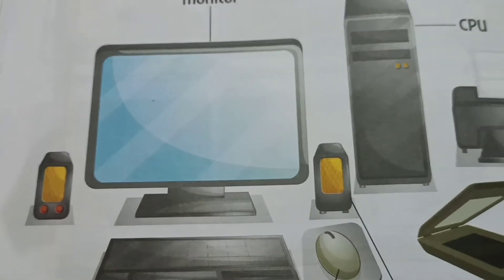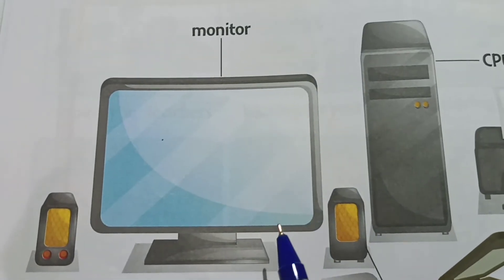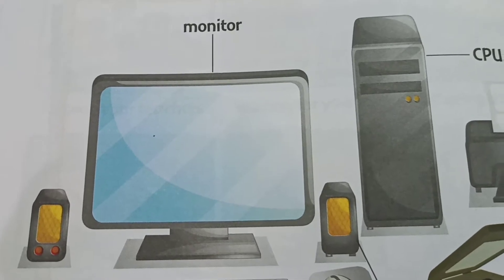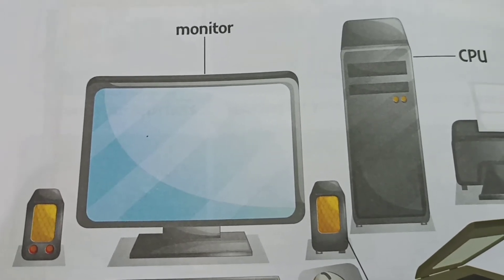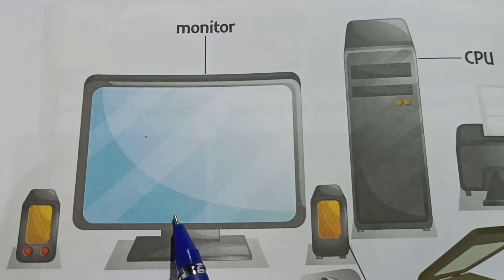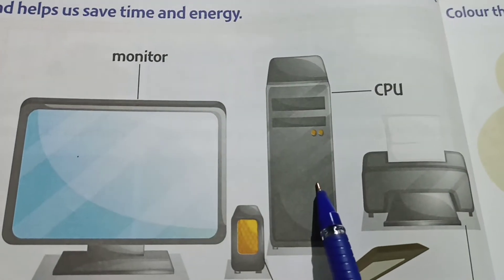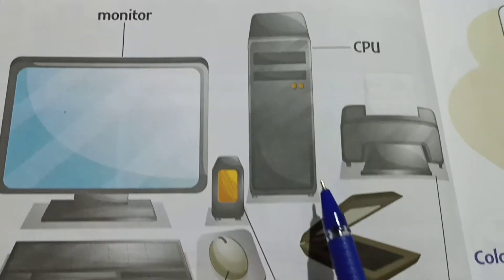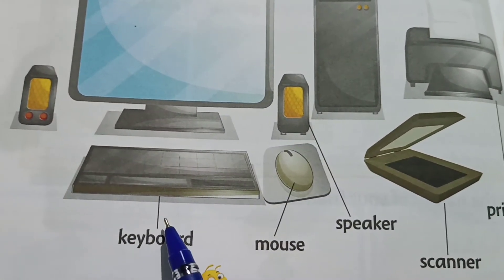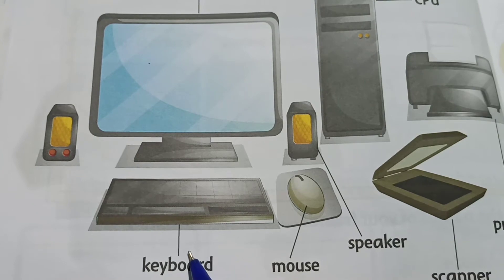What is this, children? The different parts of a computer. So the major parts of a computer are monitor, CPU, mouse, and keyboard. These are the major parts.